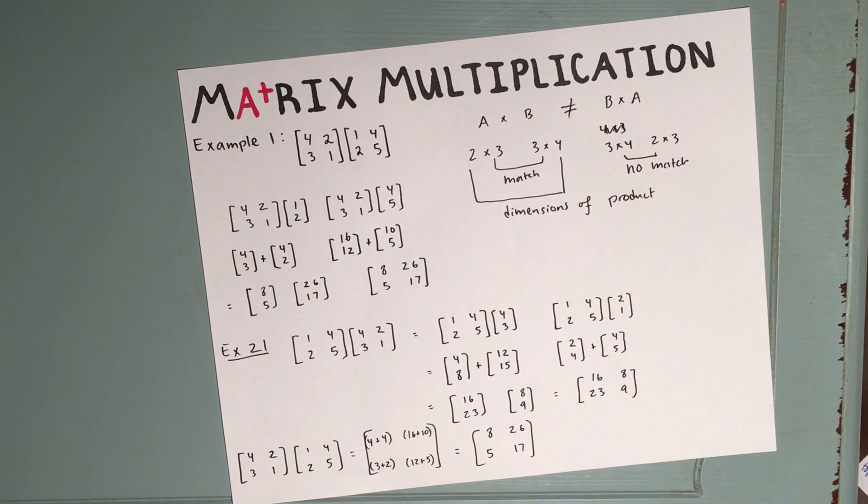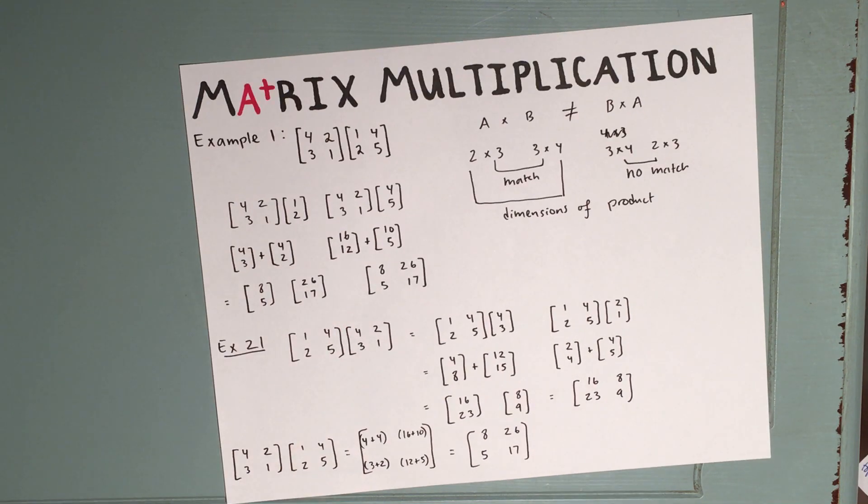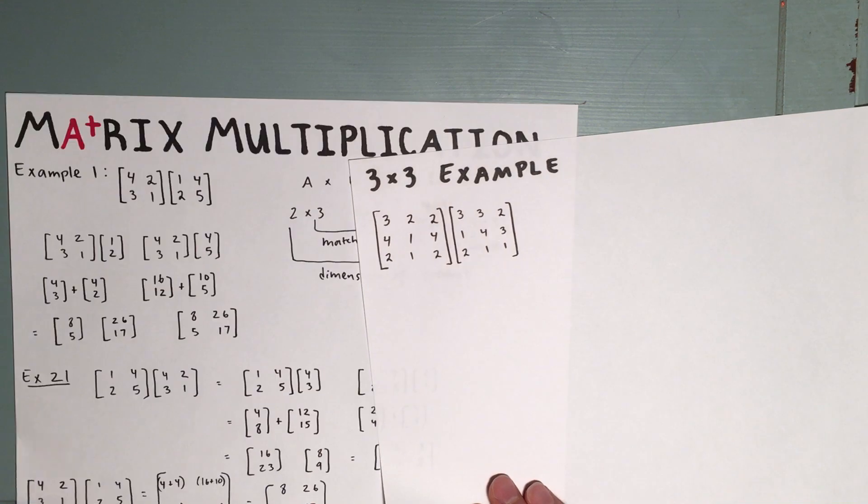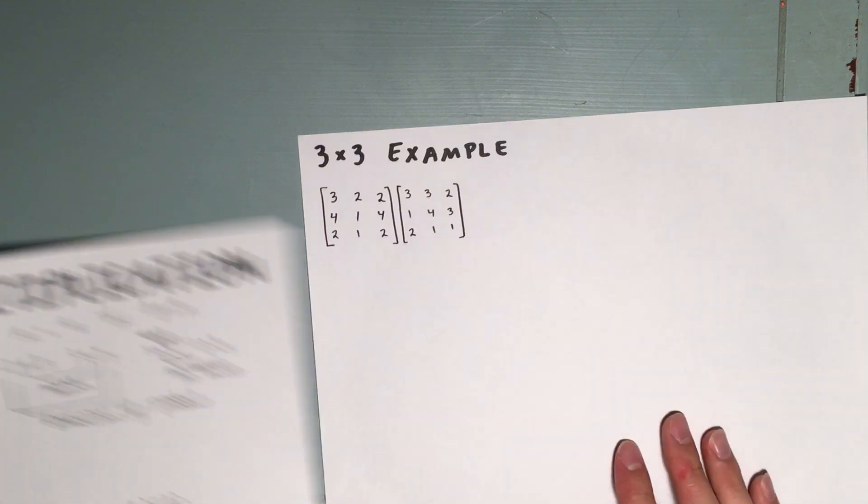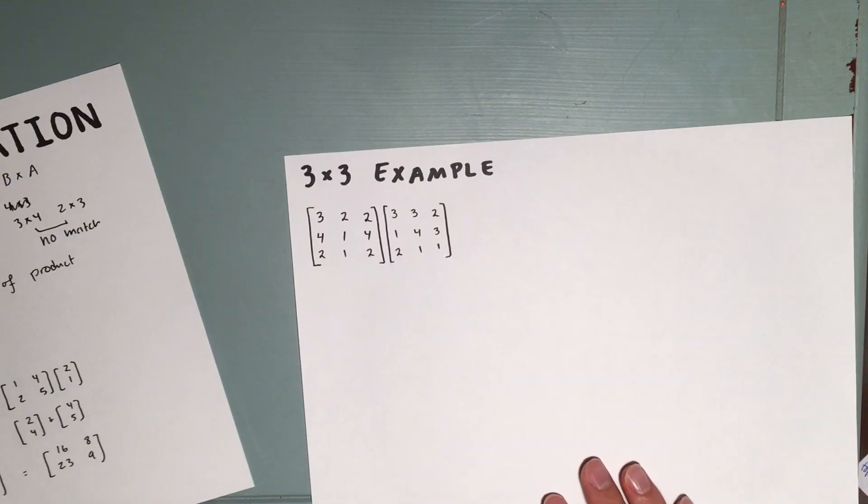So you're free, of course, to use whichever method you like. Personally, I prefer this method, even though it does take a little bit longer, just because I tend to make fewer mistakes. Now, the same process still works for larger matrices and matrices that aren't square. For example, we could use it on a 2 by 3 times a 3 by 4. Let's do one more example on a 3 by 3.